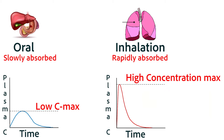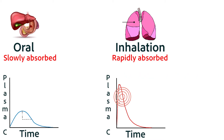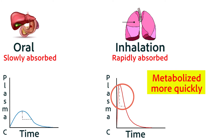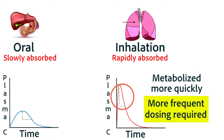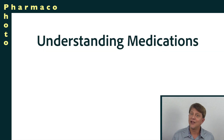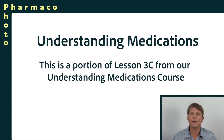Another thing to note is that the type of administration that has the greatest C-max will usually have the steepest fall in drug concentrations. So the concentration increases more rapidly and decreases more rapidly, because more medication is being metabolized when there's a higher concentration of the drug. In the quiz on this lesson, we're going to take a couple of clinical scenarios that will reinforce these concepts.